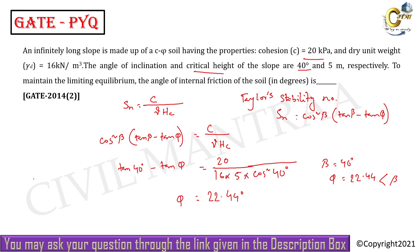So in case of c-phi soil, φ can be less than β - this is possible. But if it's cohesionless soil, meaning only phi soil, it is never possible. So it's an easy question - you just need to know which formula to use: Sn = c/(gamma × Hc).